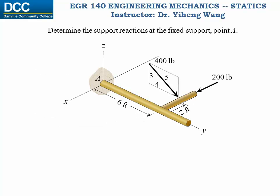Let's look at this example. We are asked to determine the support reactions at the fixed support point A. When we analyze the situation, we realize that since this is a fixed support at point A, it prevents all kinds of motion. Therefore, there must be force support reactions along all three axes, and moment support reactions about all three axes as well.